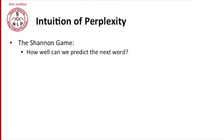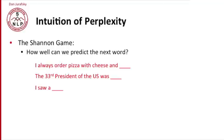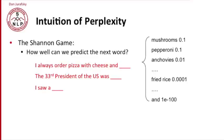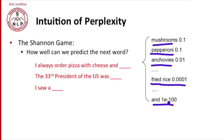Let's think about the intuition of perplexity. Like many ideas in language modeling, this dates back to Claude Shannon. Shannon proposed a game about word prediction: how well can we predict the next word? For example, given the sentence 'I always order pizza with cheese and...', our job is to predict the next word. A good language model might guess mushrooms or pepperoni are likely, anchovies less likely, fried rice very unlikely, and 'and' extremely unlikely.